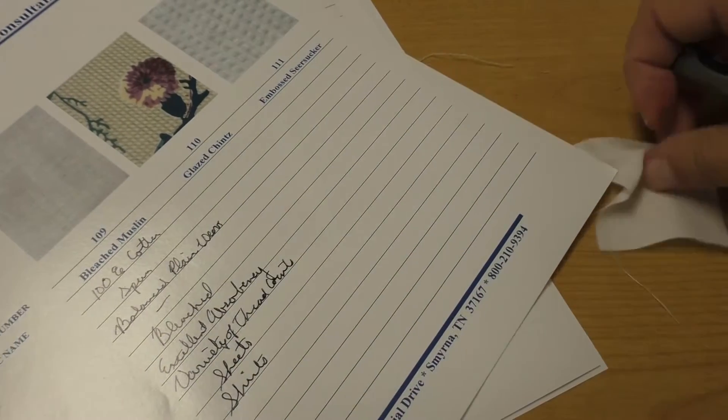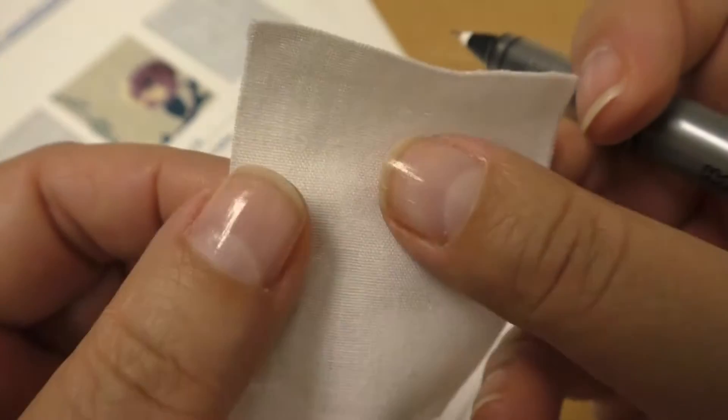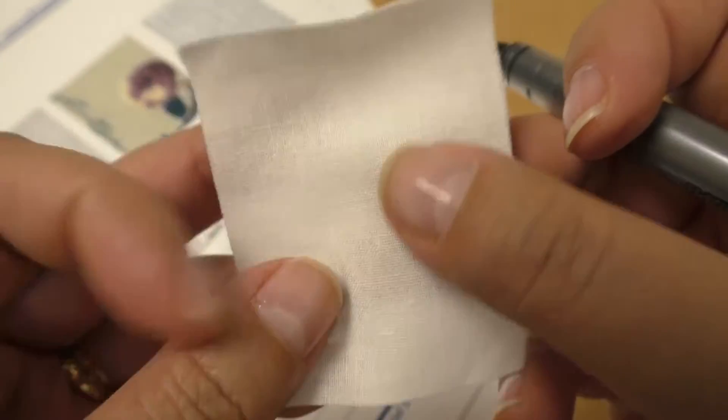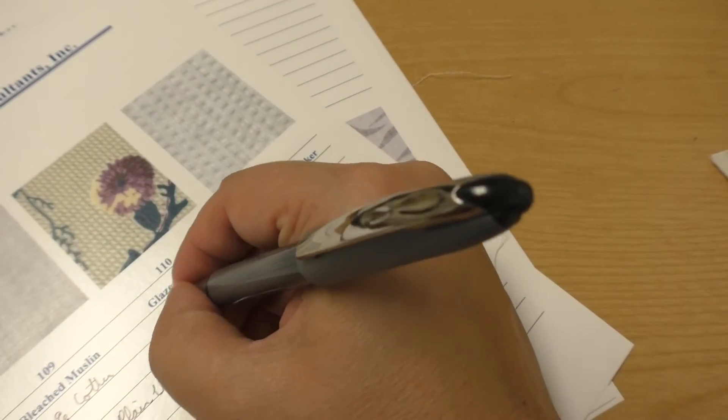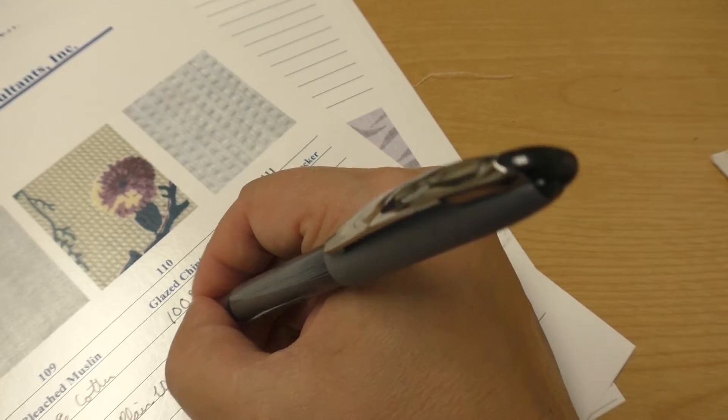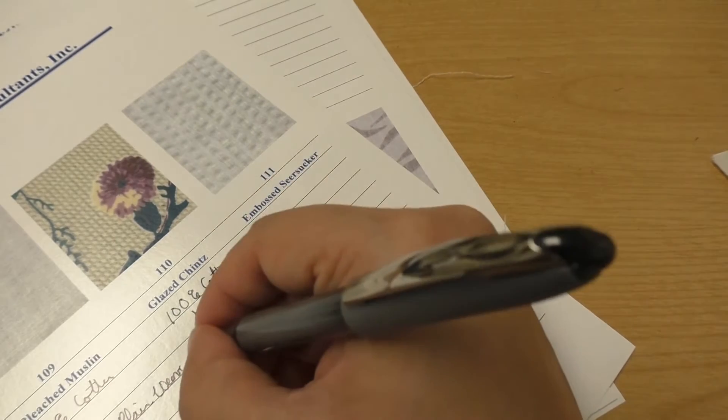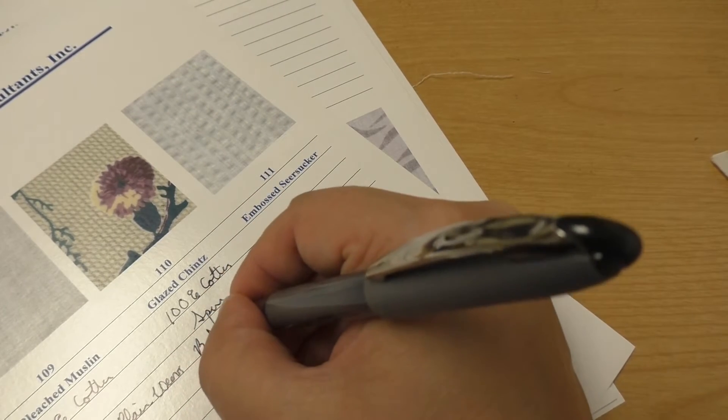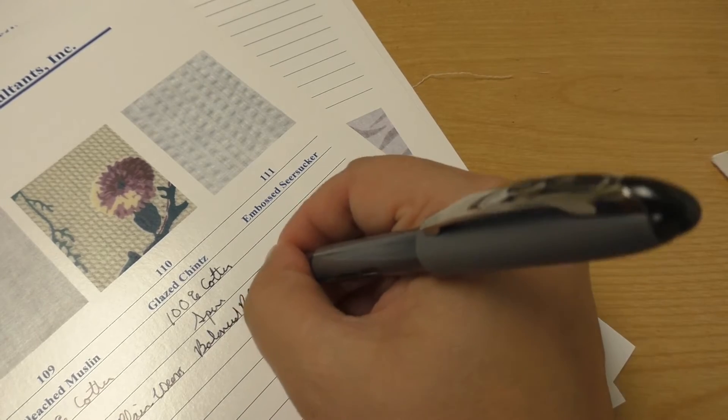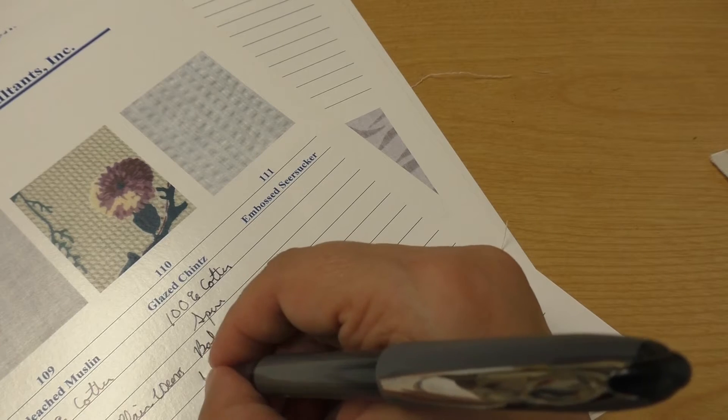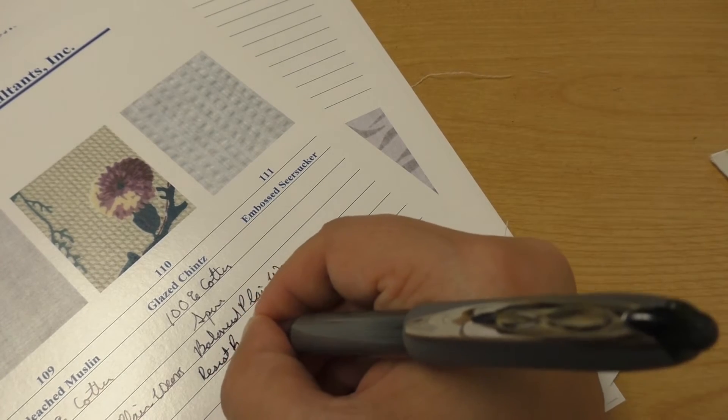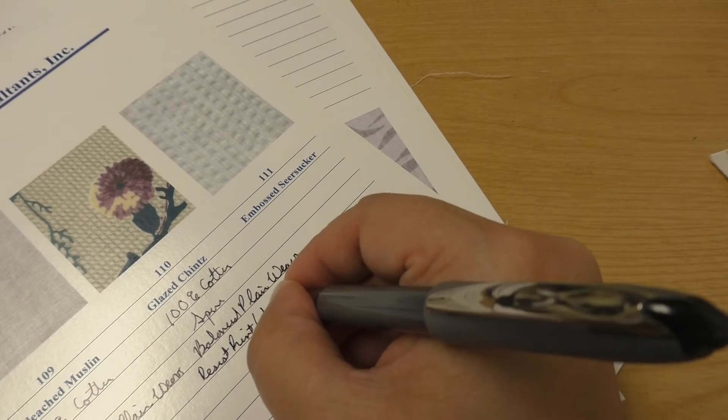I really want to compare this with the muslin, the previous swatch. The blazed tints is 100% cotton, it is spun, it is also a balanced plain weave, dyed using a resist print screen print.